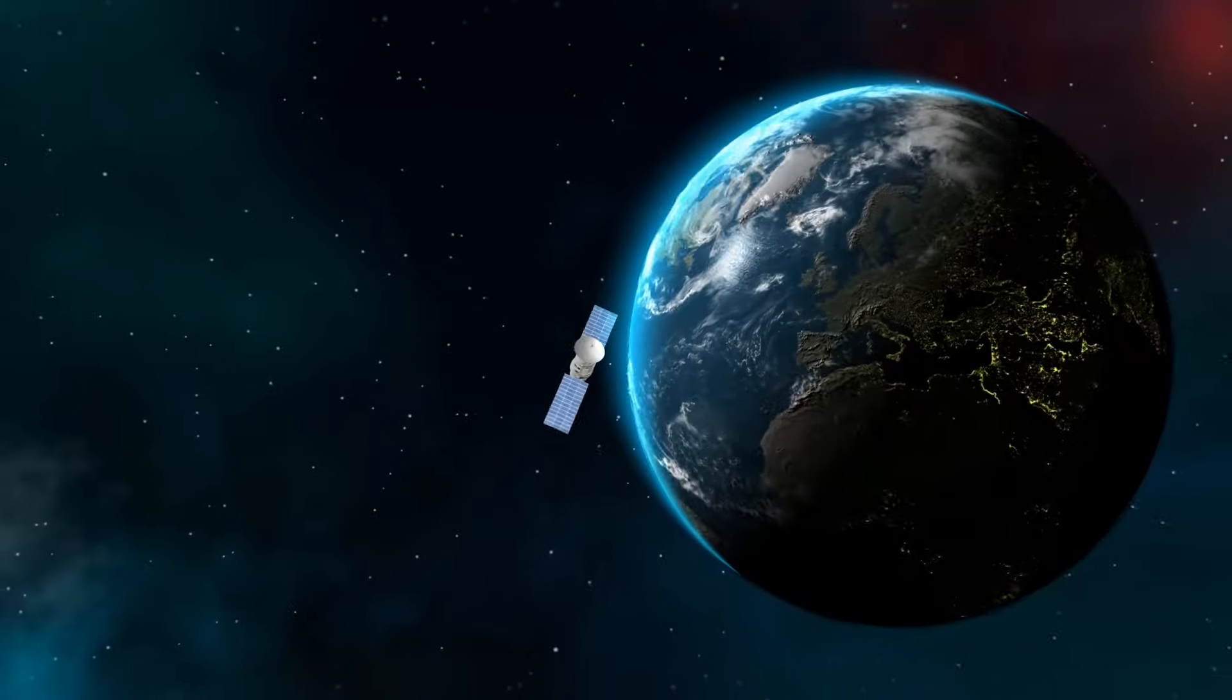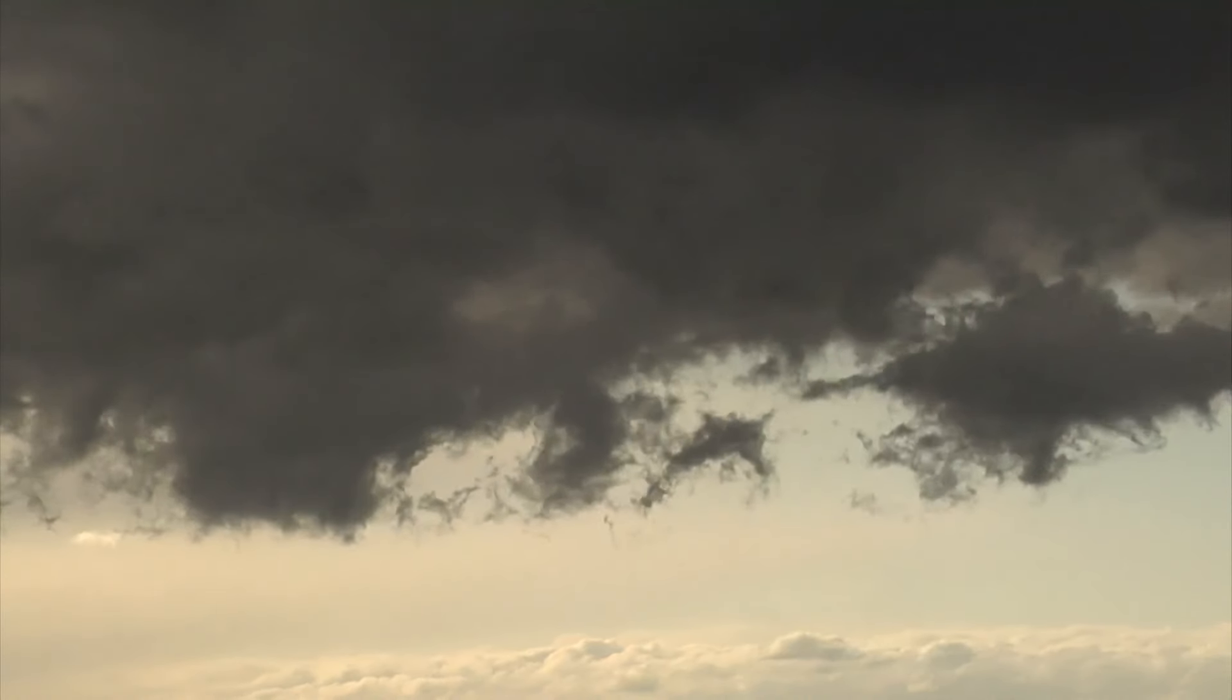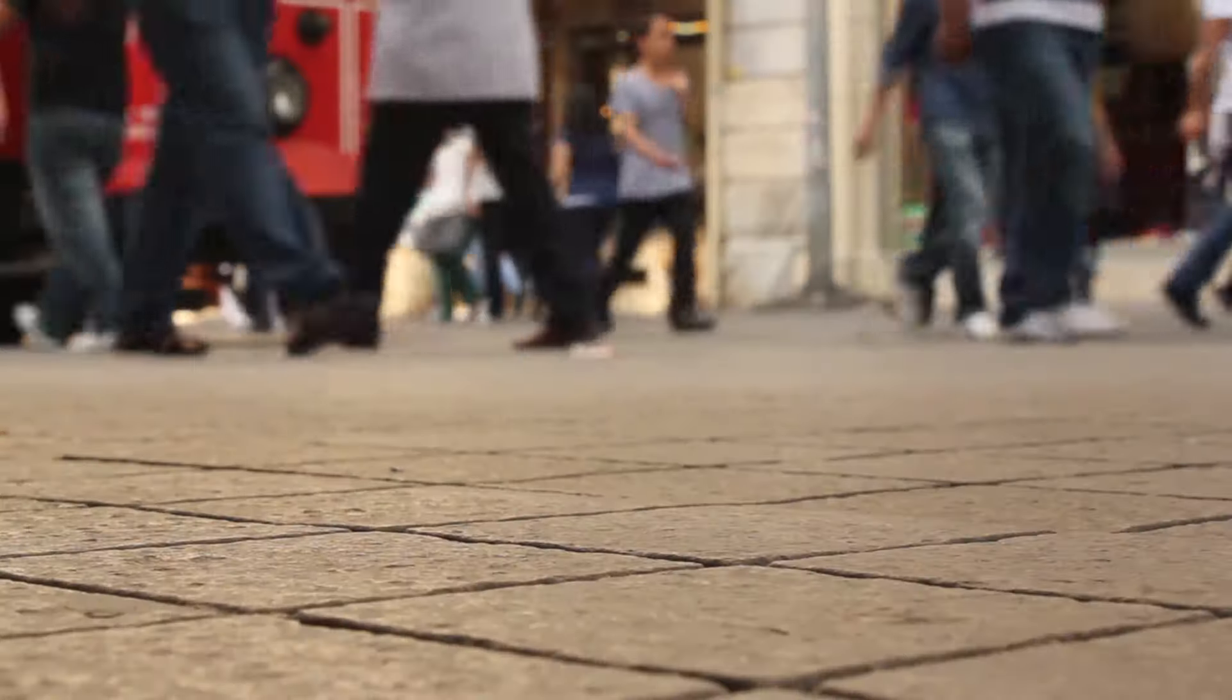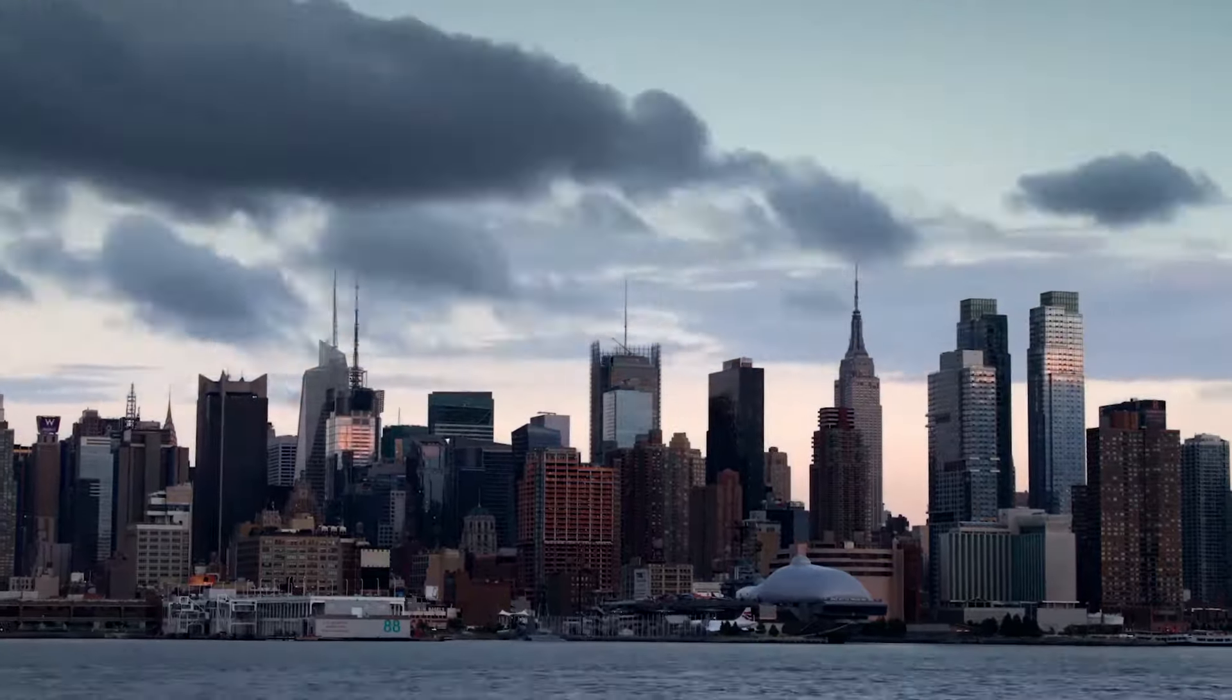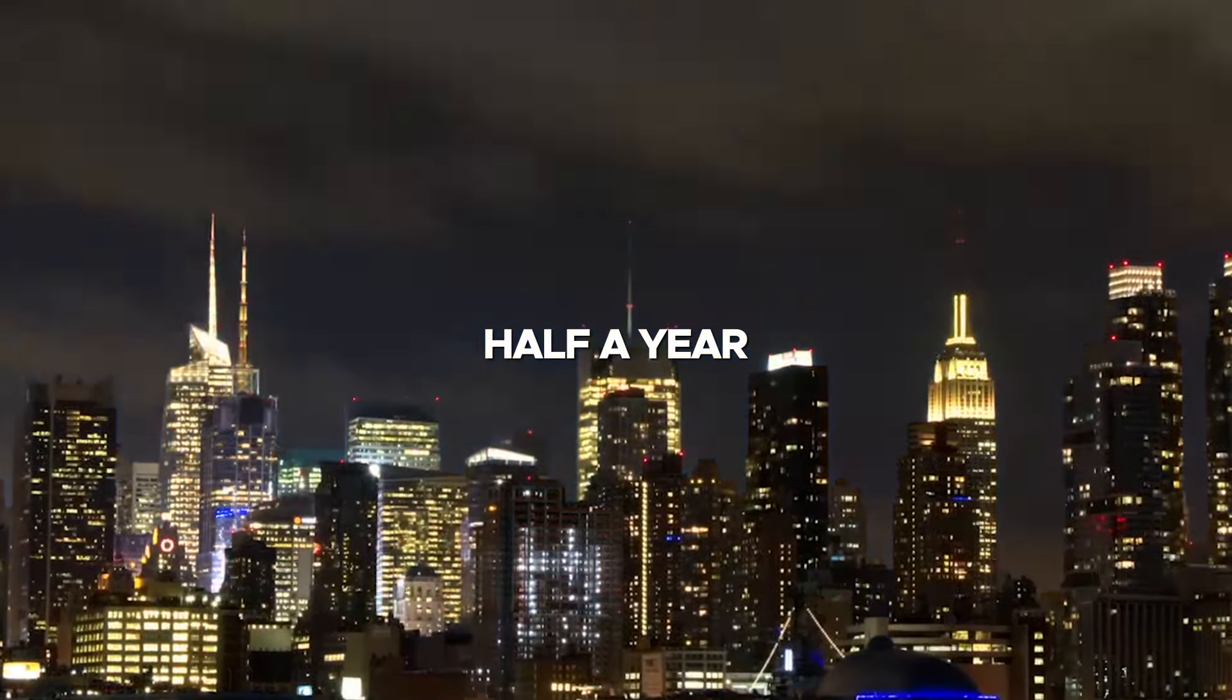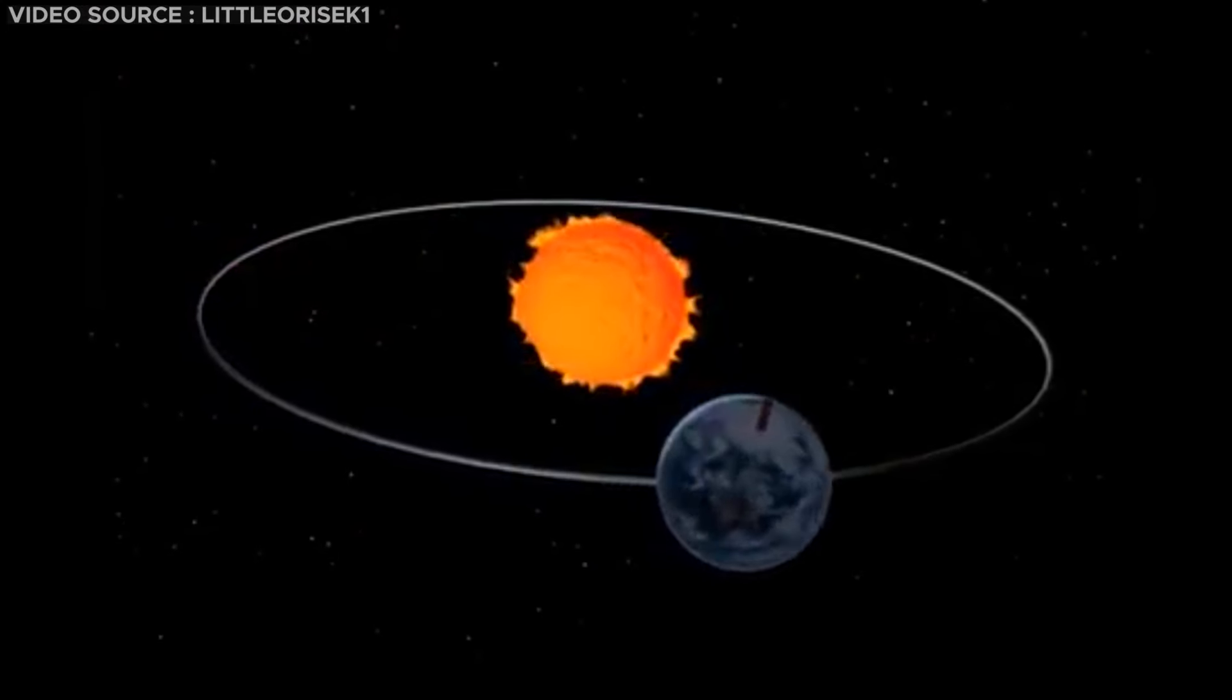If Earth's rotation were to drastically slow down, the consequences would be substantial. Contrary to popular belief, you wouldn't be flung into space instantaneously. Gravity would keep you firmly grounded. However, numerous adjustments would occur. A day, instead of the familiar 24 hours, would last half a year with an extended period of daylight and darkness as Earth continues its orbit around the Sun.